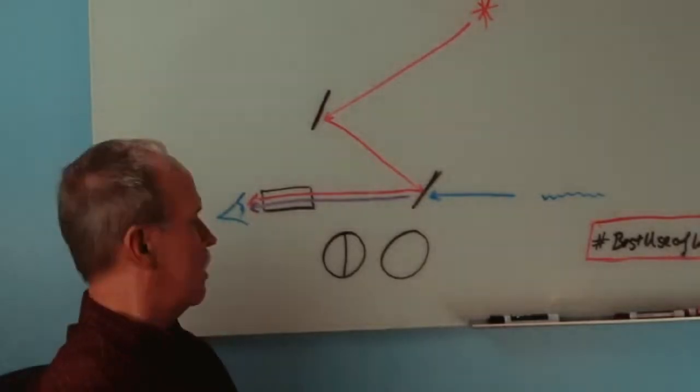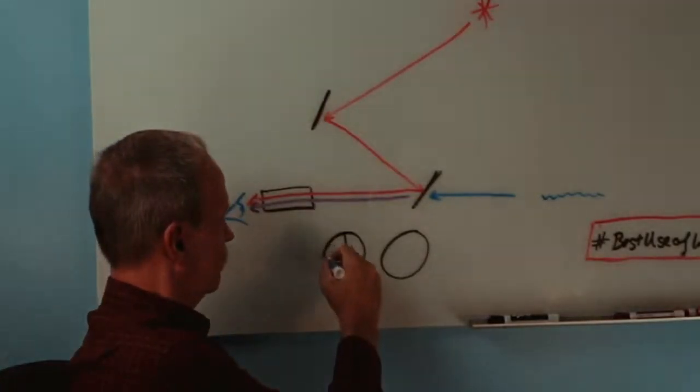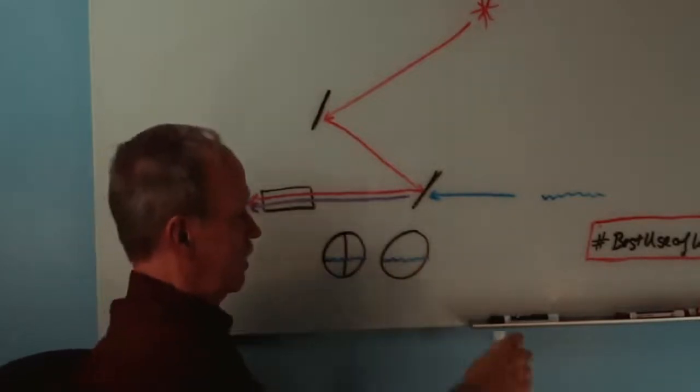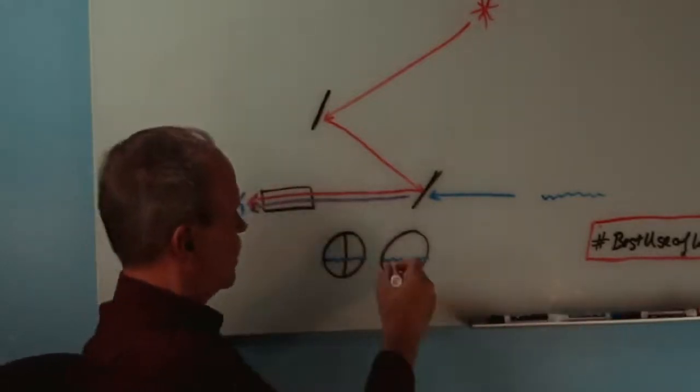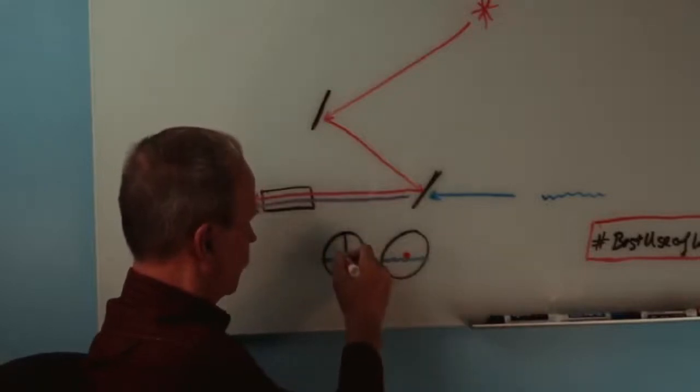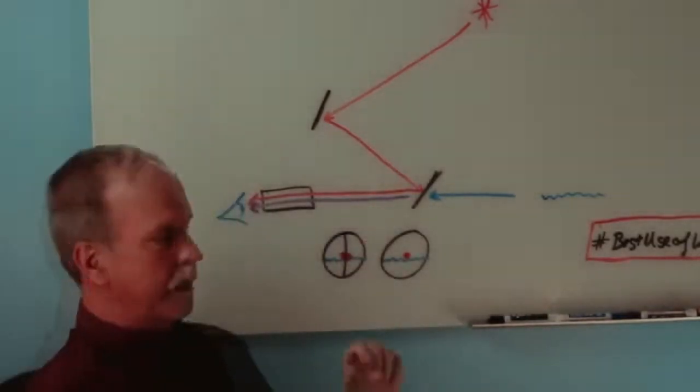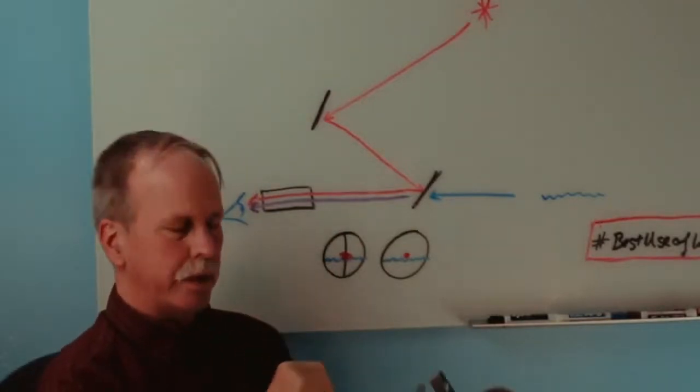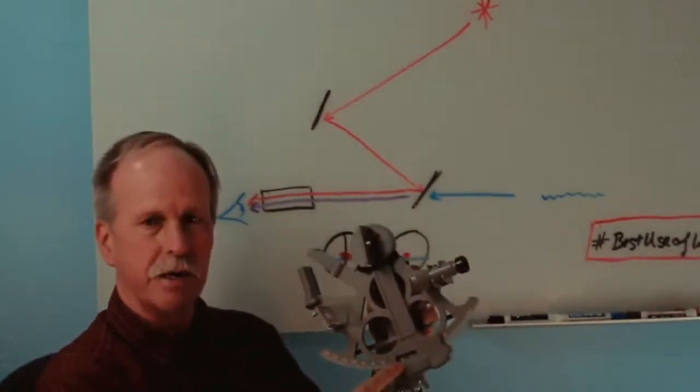Now, when this is set up correctly, what we will do is we will see the ocean. And then we will see the star right on the horizon. That means we have this angle correct. So then to get our reading, what we do is we simply read off the angle on the sextant.